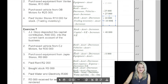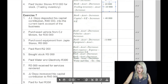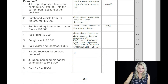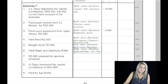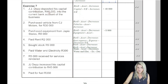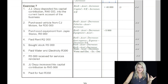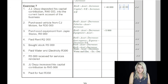Let's turn to our last exercise on the effect of transactions on the accounting equation. We are now on exercise number seven, page 39. The first transaction: JJ Depp deposited his capital contribution of 40,000 Rand into the current bank account. The two accounts are bank and capital. Bank is an asset which increases by 40,000 Rand, and owner's equity also increases by 40,000 Rand when capital is increased.